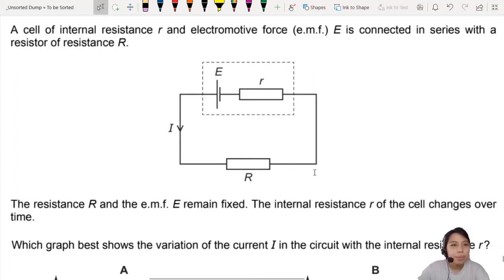Here is the cell with internal resistance r connected in series with an internal resistor, big R. Okay, what are we trying to do here? It's a graph question. The resistance R and emf is fixed, so those are constant, that's good to know.